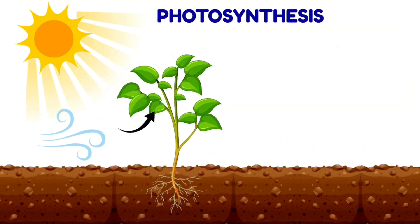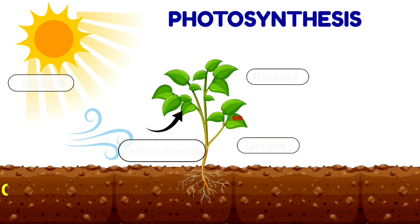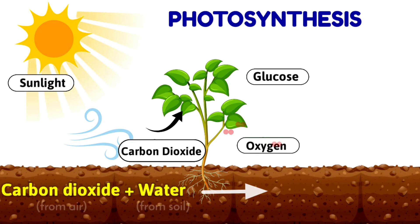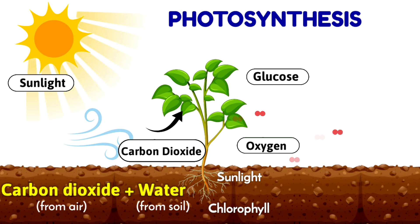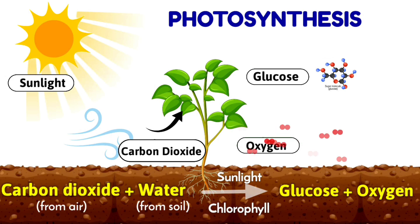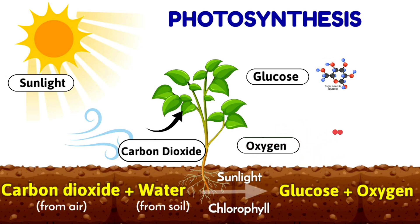To summarize, photosynthesis is the process by which green plants prepare their own food using sunlight. In this process, carbon dioxide from the air and water from the soil combine in the presence of sunlight and chlorophyll. This results in the formation of glucose, and oxygen is released into the air.